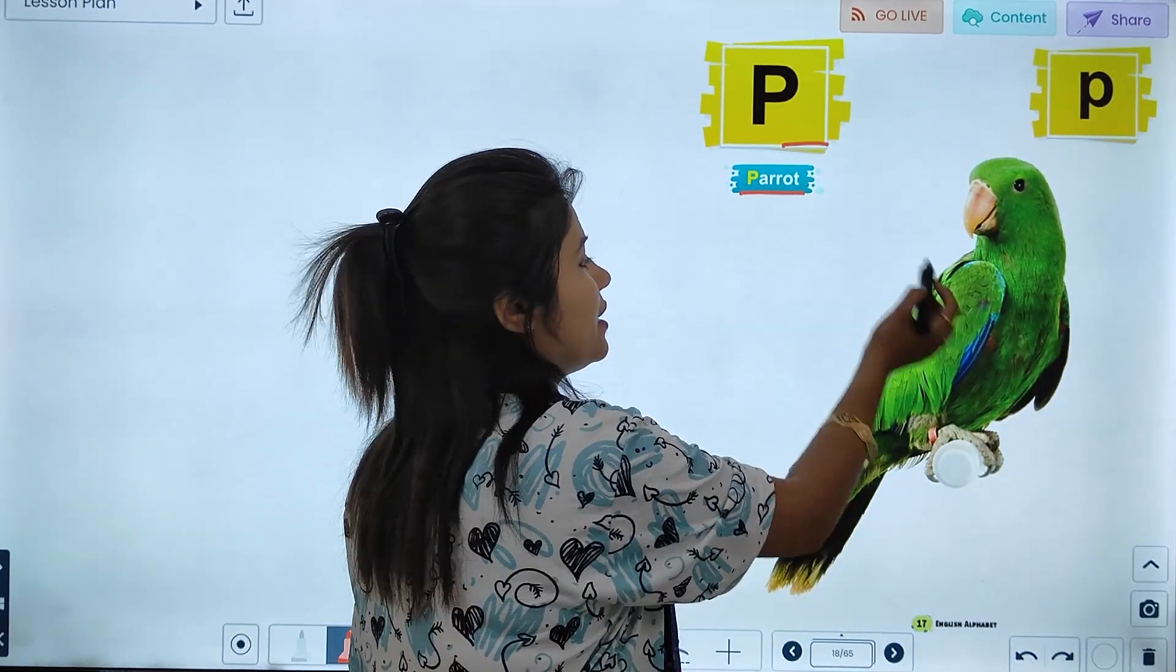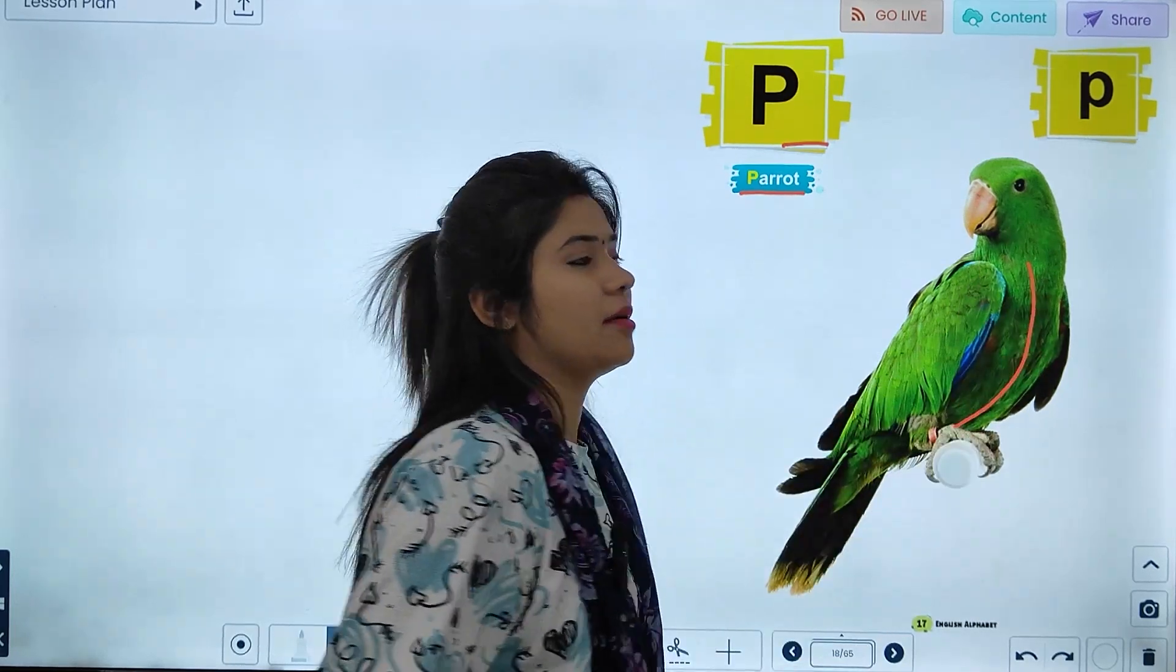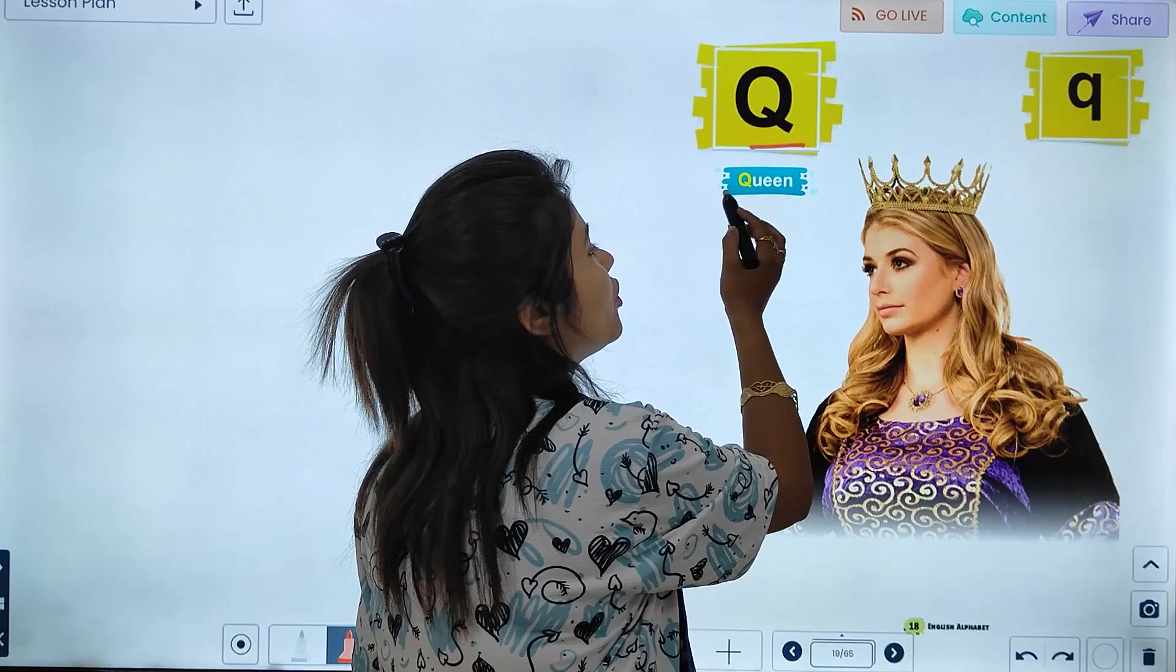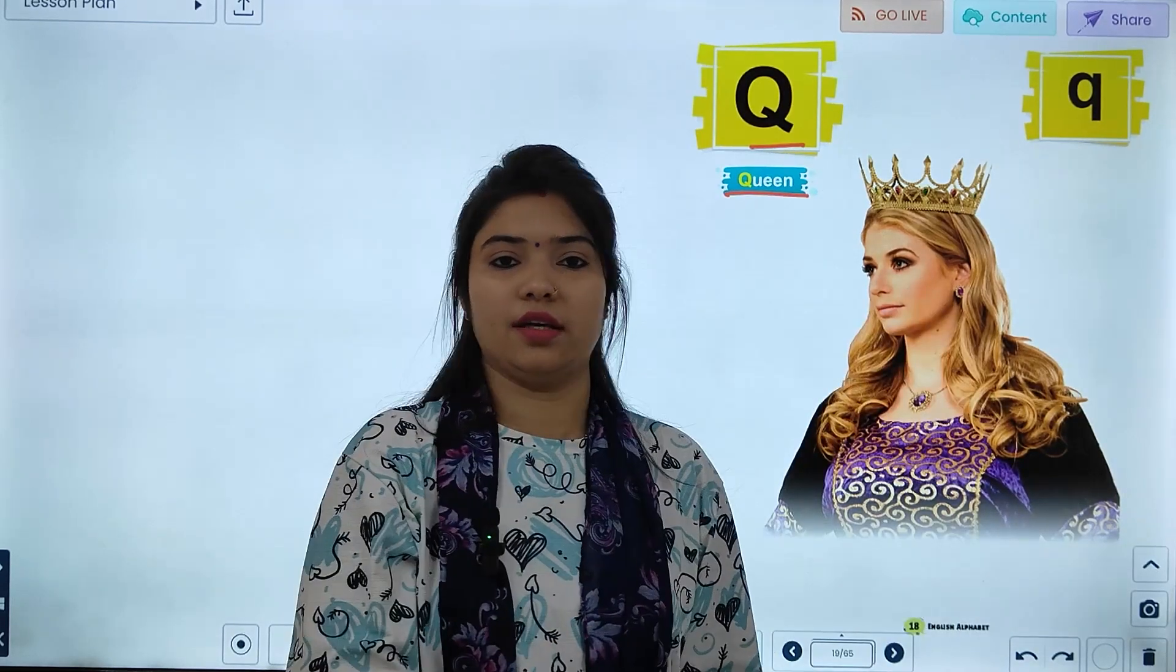Next, P for Parrot. So, what do we have here? Parrot. Q, Q for Queen. So, what is this? Queen.